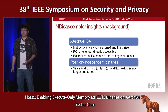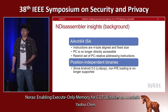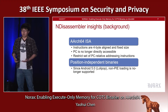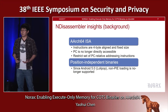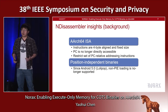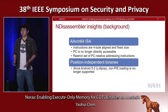Before diving into how NDisassembler works, I want to share some background on the rationale behind its analysis. In the ARM64 ISA, instructions are all four-byte-aligned and fixed-size. Also, the PC register is no longer directly accessible. Most importantly, ARM64 only exposes a very limited set of instructions to perform PC-relative addressing. Combined with the fact that since Android 5.0, Google removed non-PIE loading from the dynamic loader — meaning all binaries on phones purchased in the last three years are position-independent — these two observations form the basis of our approach.